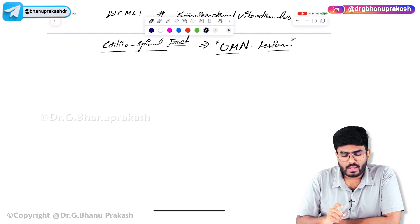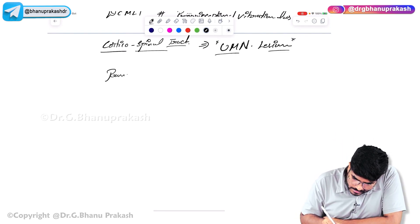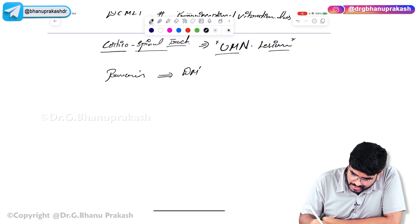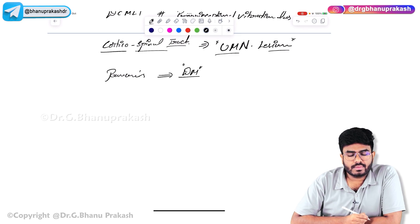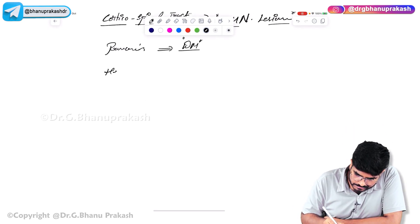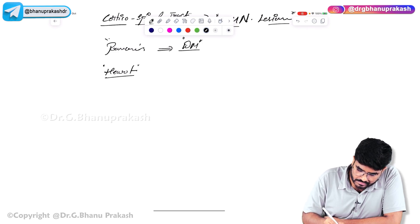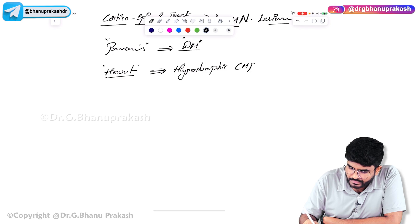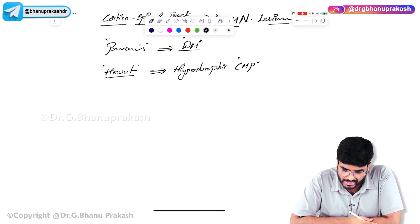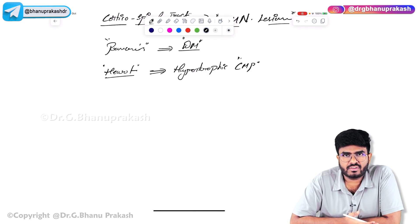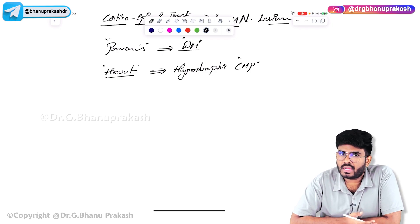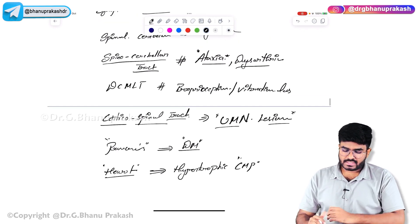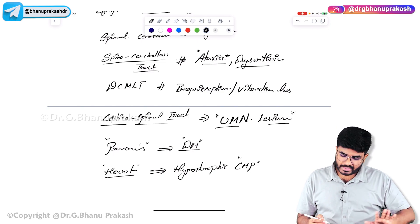In Friedreich's ataxia, three organ systems are affected. The pancreas is affected — leading to diabetes mellitus due to beta cell dysfunction of the islets of Langerhans. The heart is loaded with iron, causing hypertrophic cardiomyopathy. The brain involvement includes spinocerebellar tract damage, DCML tract damage, and upper motor neuron damage.